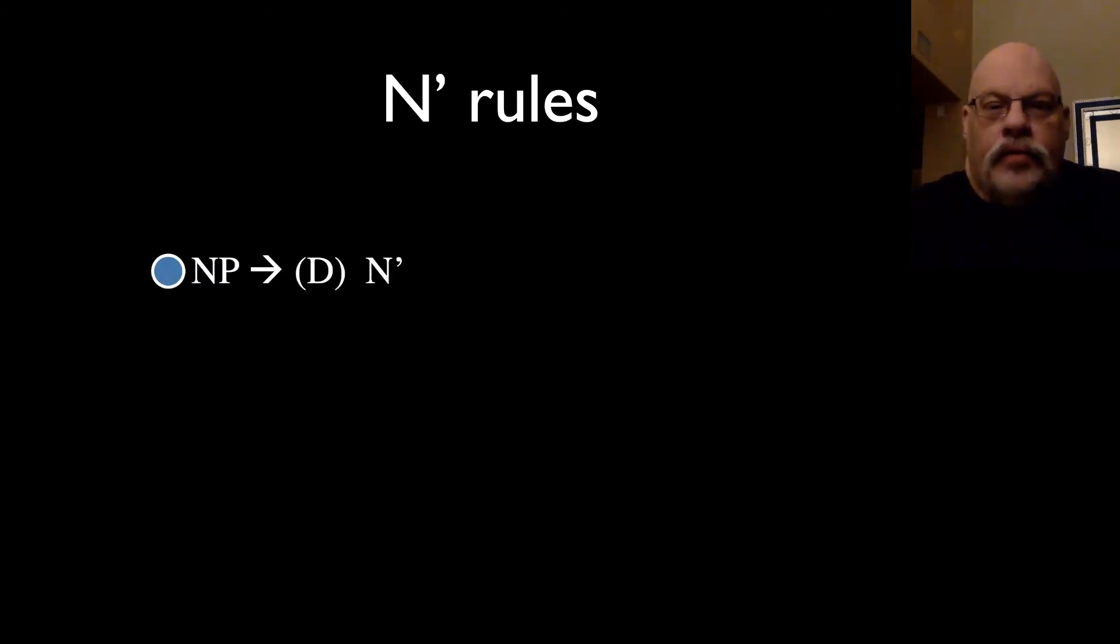We're going to need a rule that introduces the determiner at the very top, which pushes it to the left-hand side. And that rule says a noun phrase consists of a determiner followed by an N bar category. Notice not an N, an N bar.